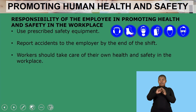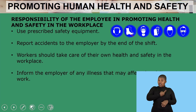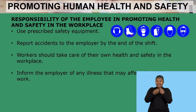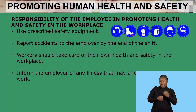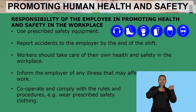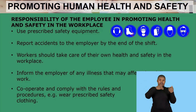Workers should take care of their own health and safety in the workplace. They should inform the employer of any illness that may affect their ability to work — if they feel they are not fit enough to work, they should inform the employer so that they don't come in, because that could compromise their health. They should also cooperate and comply with rules and procedures, for example by wearing prescribed safety clothing, which would be the required uniform before starting work.